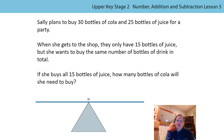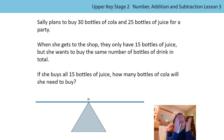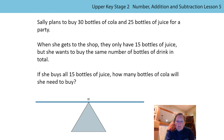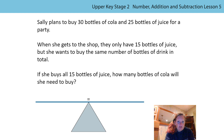Sally plans to buy 30 bottles of cola and 25 bottles of juice for a party. When she gets to the shop, they only have 15 bottles of juice. She does, however, want to buy the same number of bottles of drink in total. If she buys all 15 bottles of juice, how many bottles of cola will she need to buy so that she ends up with the same number of bottles? Pause the video, read the question again — it's really valuable in maths to read questions more than once. Then have a go, maybe use the balance scales represented there for you, and see if you can do it by as little calculating as possible.